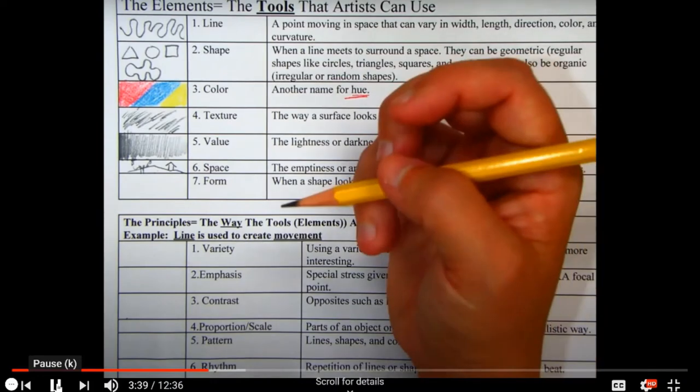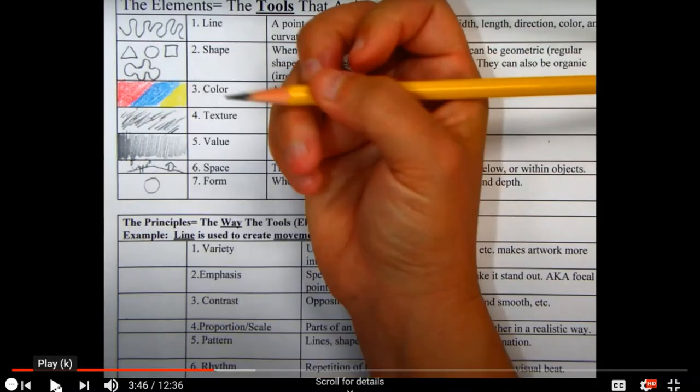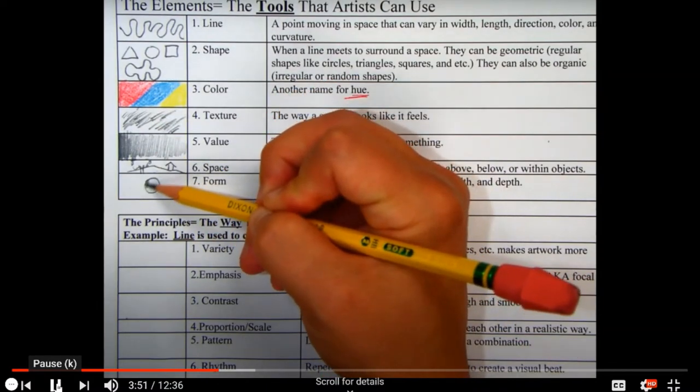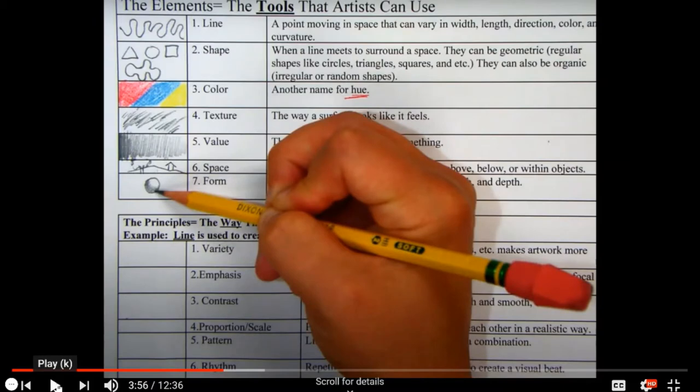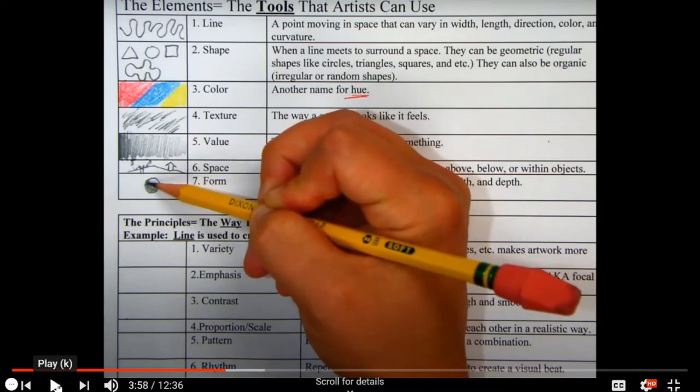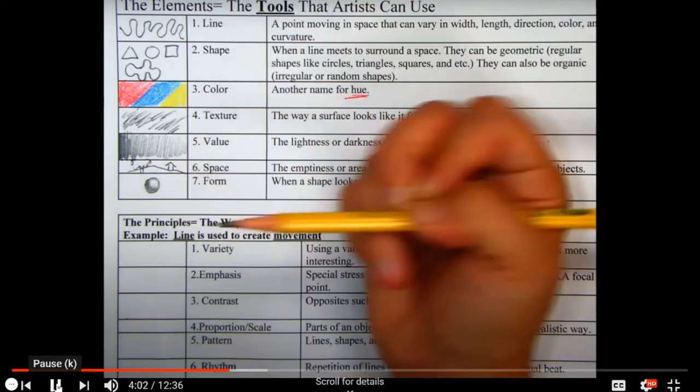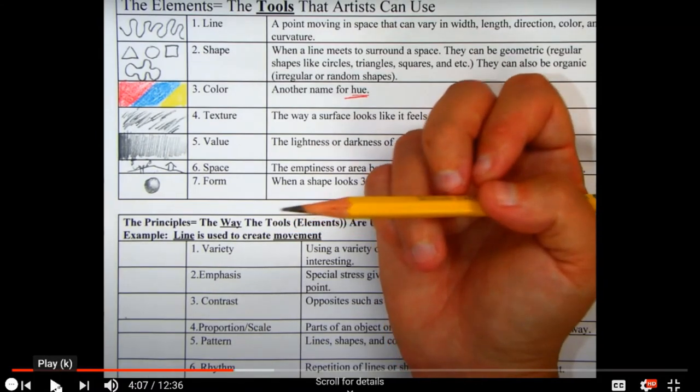And then you have form. Form is basically shapes that look 3D. Y luego tiene forma. Es cuando la figura se ve tridimensional, tiene altura, grosor y profundidad. You can go ahead and shade that circle in to make it look like a sphere popping out 3-dimensionally. You have your shadow edge. Y tienen su sombra y su reflejo y se ve tridimensional. You have your light side, your dark side, and now it looks more 3D.